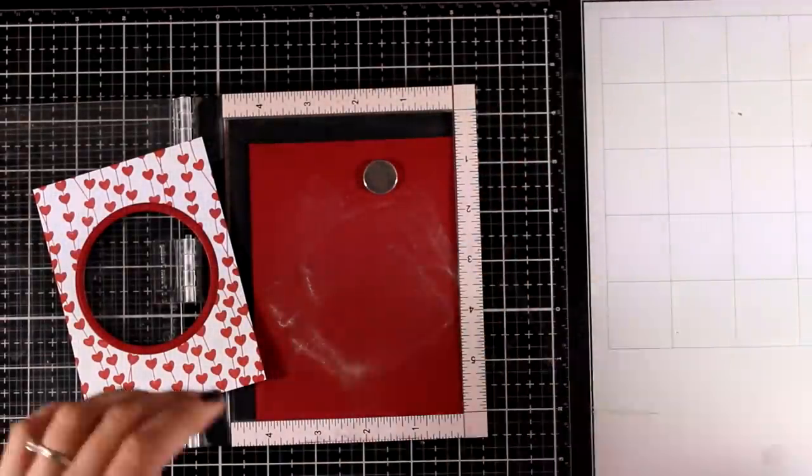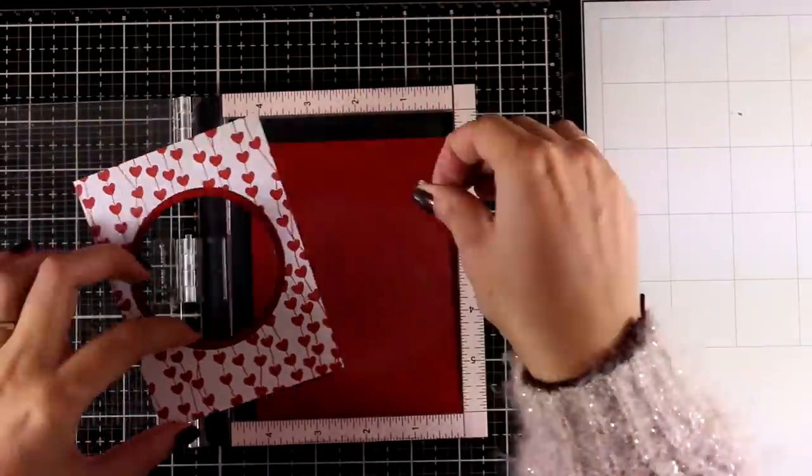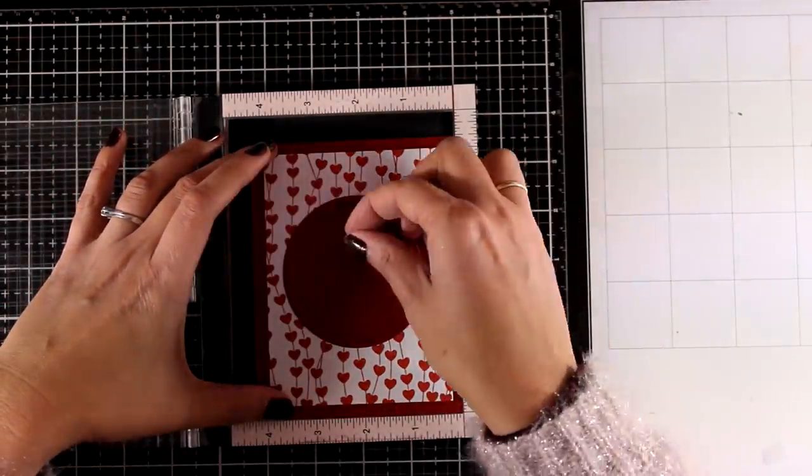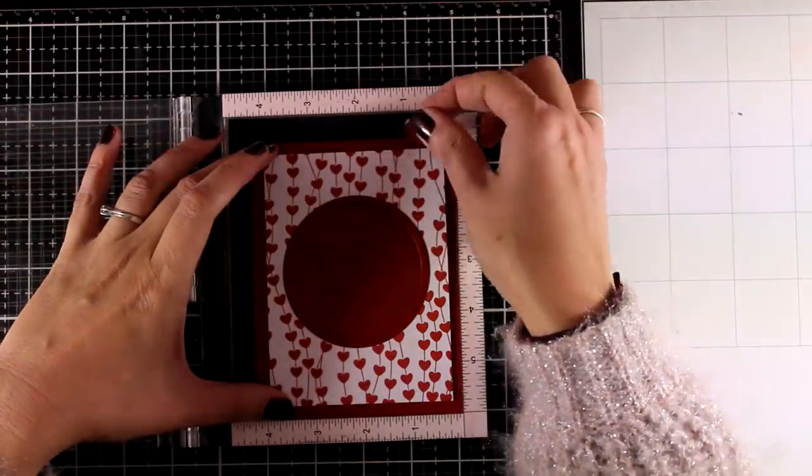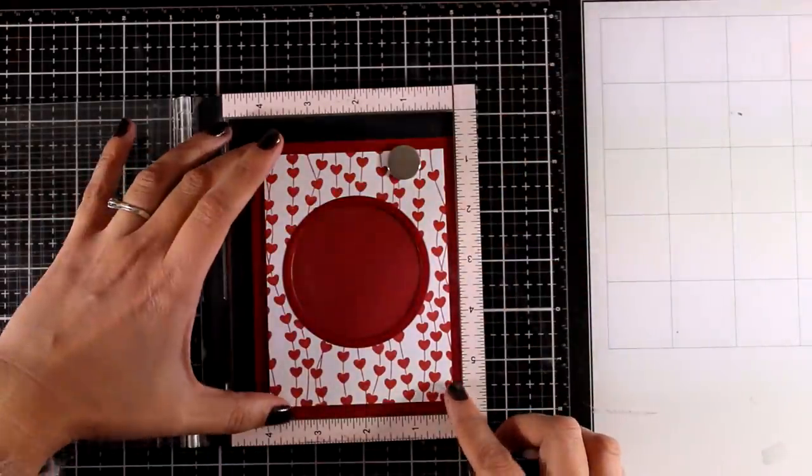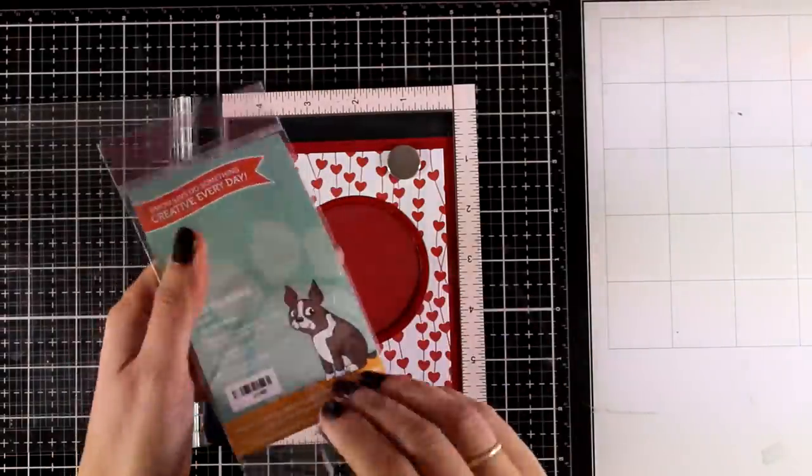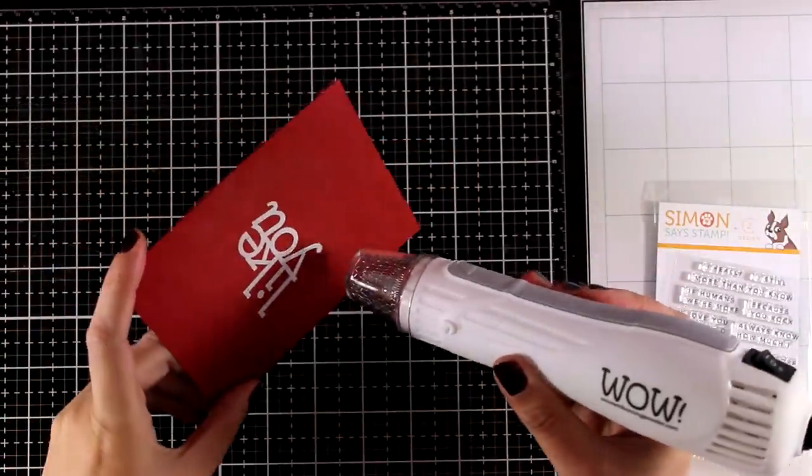Now I'm going back to stamping. I'm going to place the panel on top just temporarily so that I can measure about where I want to stamp the sentiment and I'm picking a sentiment that says like you from the like you words stamp set. This is a mini stamp set that has just been released, lovely sentiments here that you can mix and match.